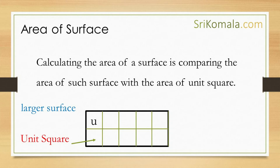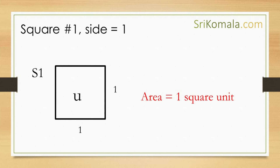Having understood that, let us prove the area of a square. First, let us see square number 1, whose sides are 1 unit length, as shown in the diagram. Then, as can be understood from the diagram, by counting the number of unit squares inside square number 1, the result is 1 unit square.